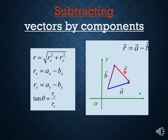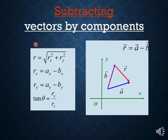We subtract vectors by components the same way we added them. I would figure out A-sub-x and A-sub-y, and figure out B-sub-x and B-sub-y. Then A-sub-x minus B-sub-x gives me R-sub-x, and A-sub-y minus B-sub-y gives me R-sub-y. The tangent of theta equals R-sub-y divided by R-sub-x, which I can rearrange to solve for theta. I can also find the length of R by doing the square root of R-sub-x squared plus R-sub-y squared.